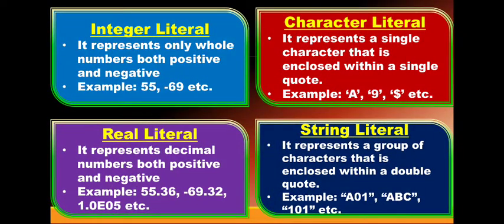Integer literal represents only whole numbers — both positive and negative — for example 55, minus 69, etc. Real literal represents decimal numbers, again both positive and negative, like 55.36, minus 69.32, etc. This real literal can also be written in exponent and mantissa form — that is scientific form — when a particular decimal number is very big. For example, 1.0e05 means 1.0 into 10 to the power 5.